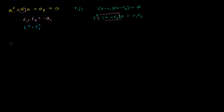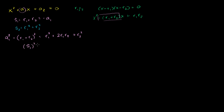One place we could start is with r1 plus r2 squared, which is of course the same thing as negative a1 squared, which equals a1 squared. This expands to r1 squared plus 2r1r2 plus r2 squared. Let's call the sum of first powers S1 and the sum of squares S2. So we've written that S1 squared equals S2 plus 2r1r2.